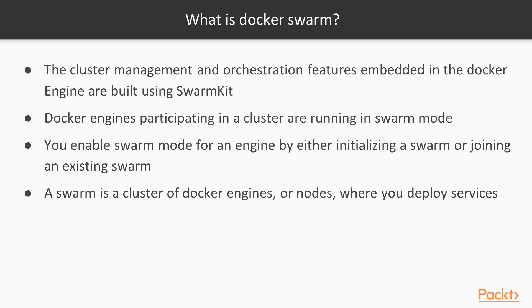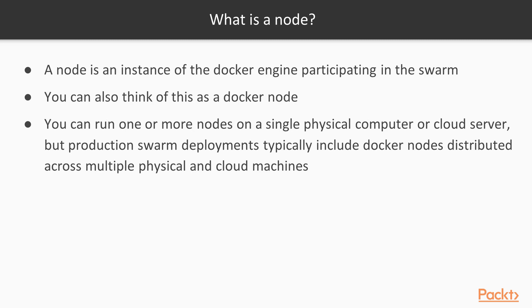A Swarm is a cluster of Docker engines or nodes where you deploy services. A node is an instance of the Docker engine participating in the Swarm. You can also think of this as a Docker node. You can run one or more nodes on a single physical computer or cloud server, but production Swarm deployments typically include Docker nodes distributed across multiple physical and cloud machines.